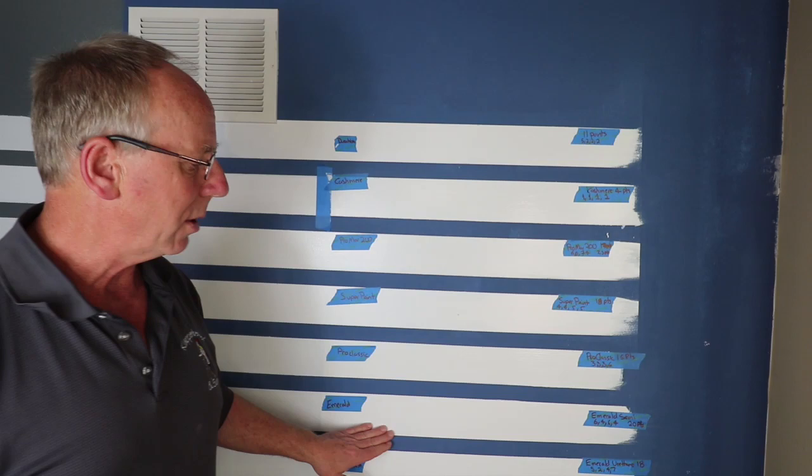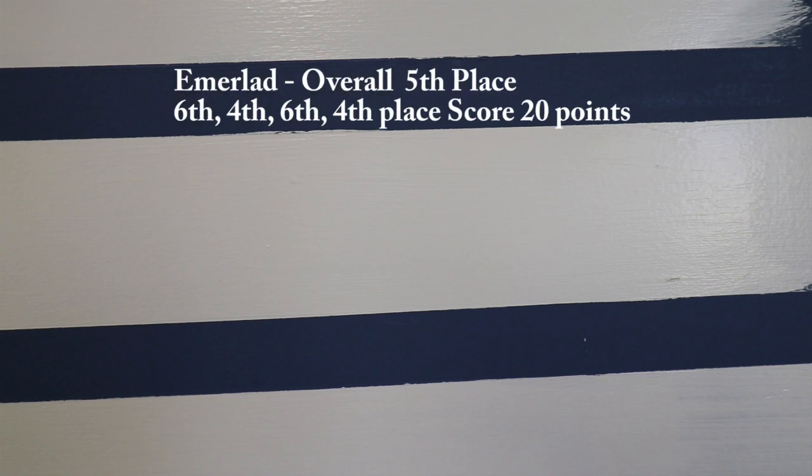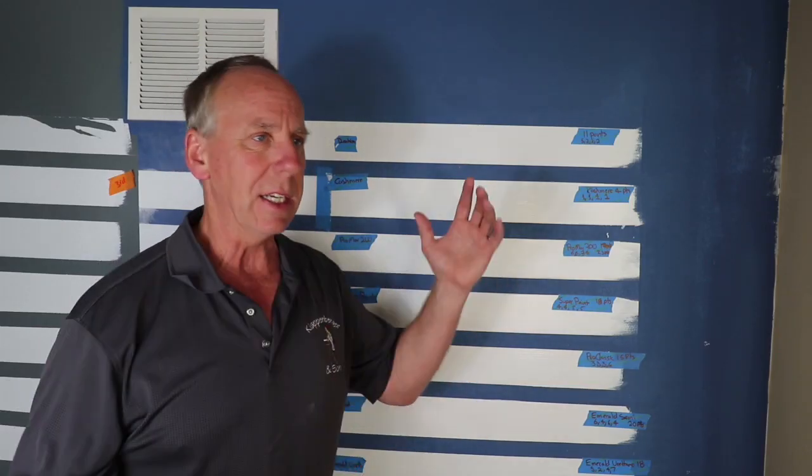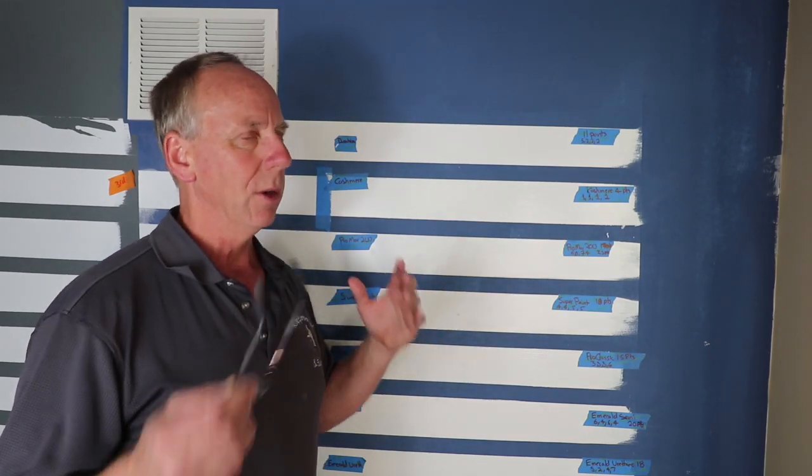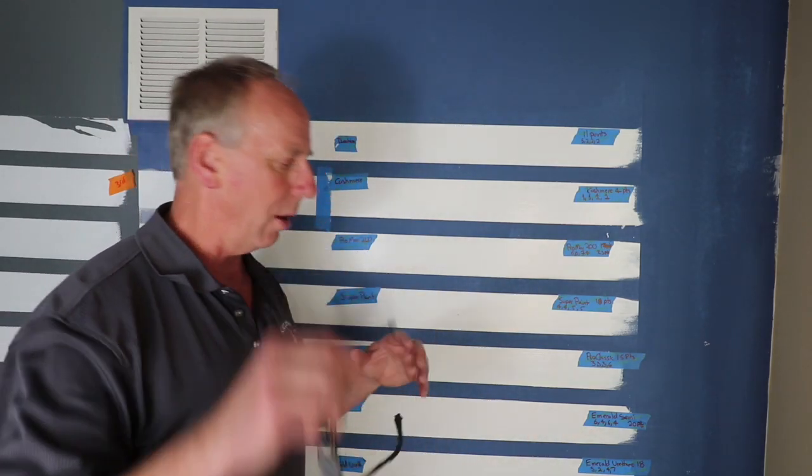The Emerald Semi Gloss, we're talking about a $90 gallon of paint, did not do so well. It got sixth place, fourth place, sixth place, fourth place. There's really not that much difference between a fourth place and a sixth place. These can really be interchanged quite easily, so that's why you see fours and sixes and fives all over the place.